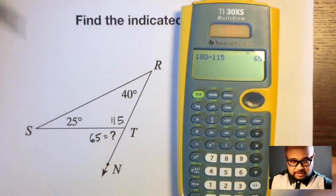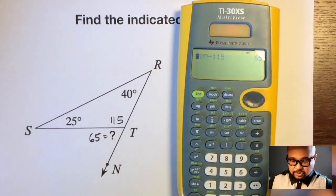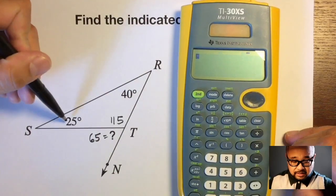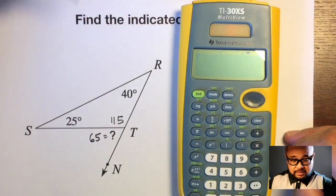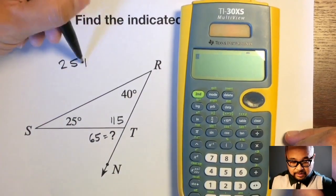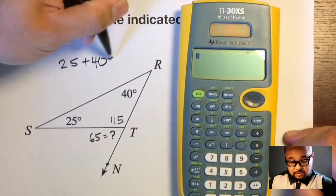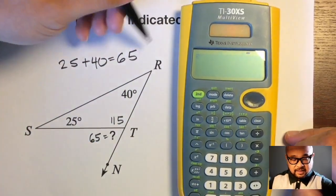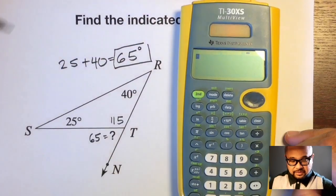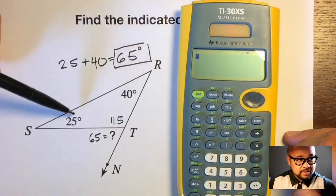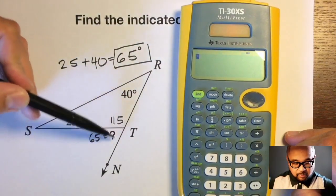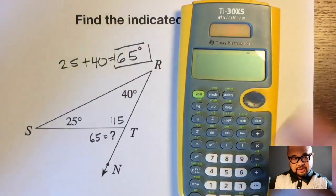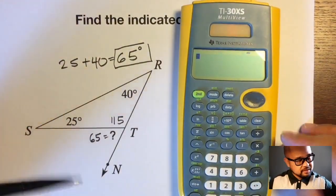The shortcut, using the exterior angles theorem, is just this interior angle plus this interior angle. 25 plus 40 equals 65 degrees. These two interior angles add up to the one exterior angle right there — you don't have to subtract from 180.